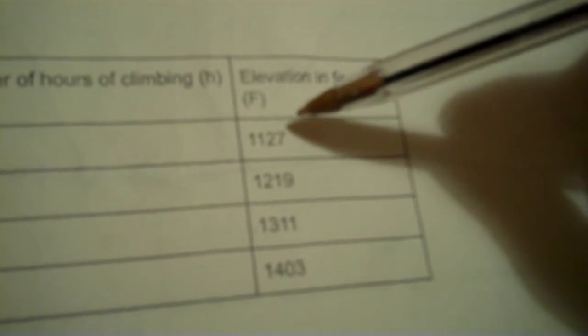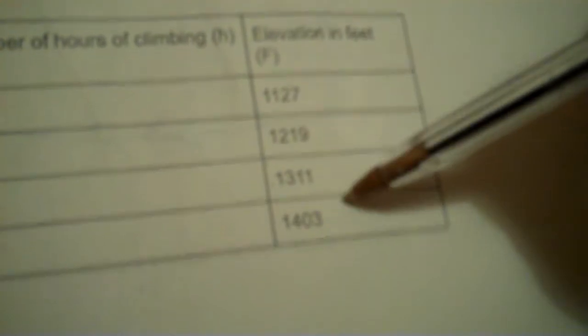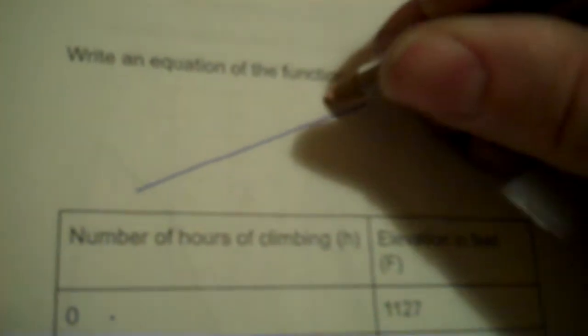Write an equation of the function modeled in the table, then sketch a graph. You're not going to sketch a graph. You're just going to write an equation. Okay, number of hours of climbing, H. Zero, one, two, three. Oh, that looks familiar. Here, elevation feet, 1,127, 1,219, 1,311, 1,403. Now, above the table, you're going to make the line. It's going to be a tight fit. But you're not going to put equals Y. You're going to put equals F. Whatever variable's there.